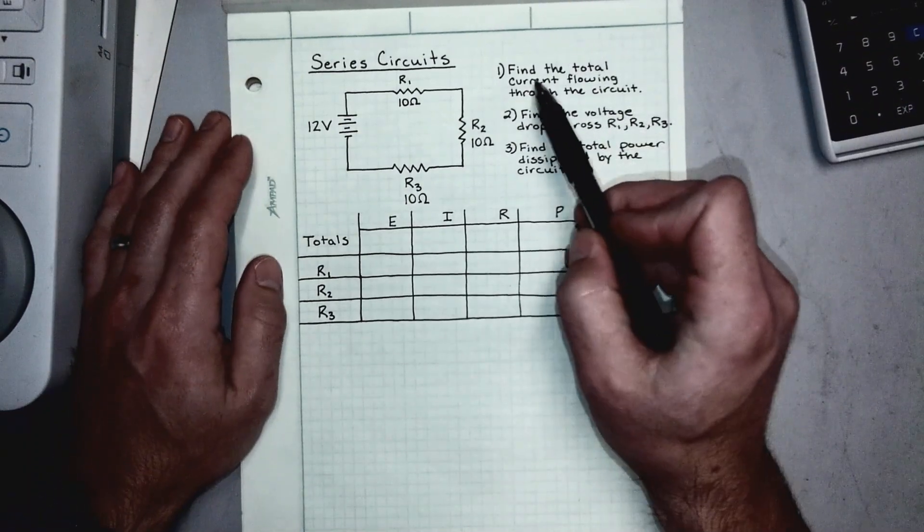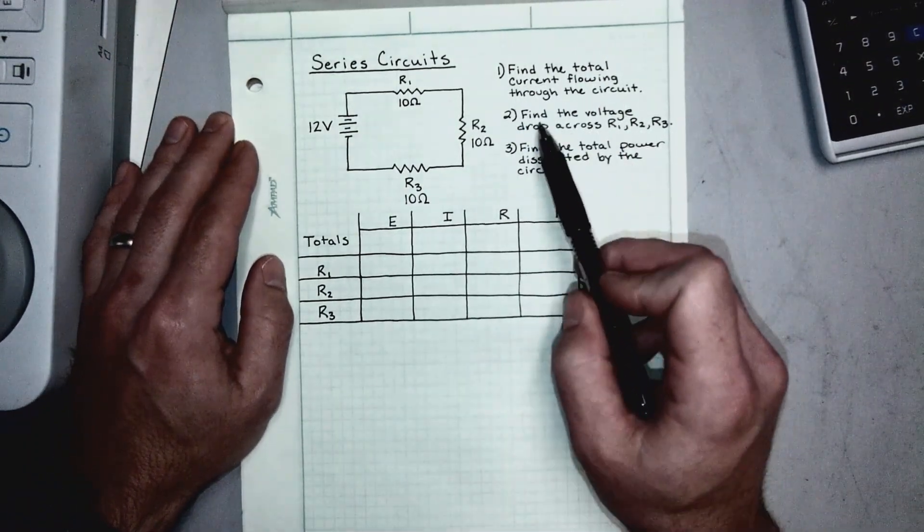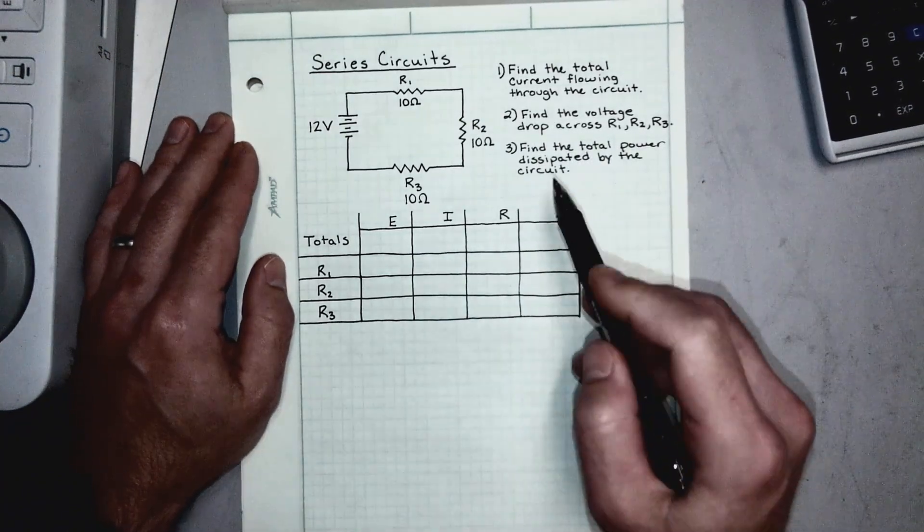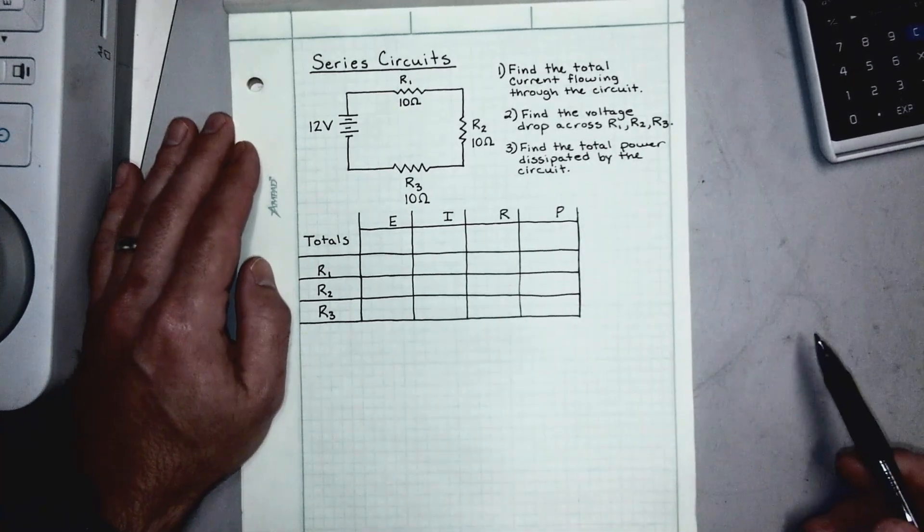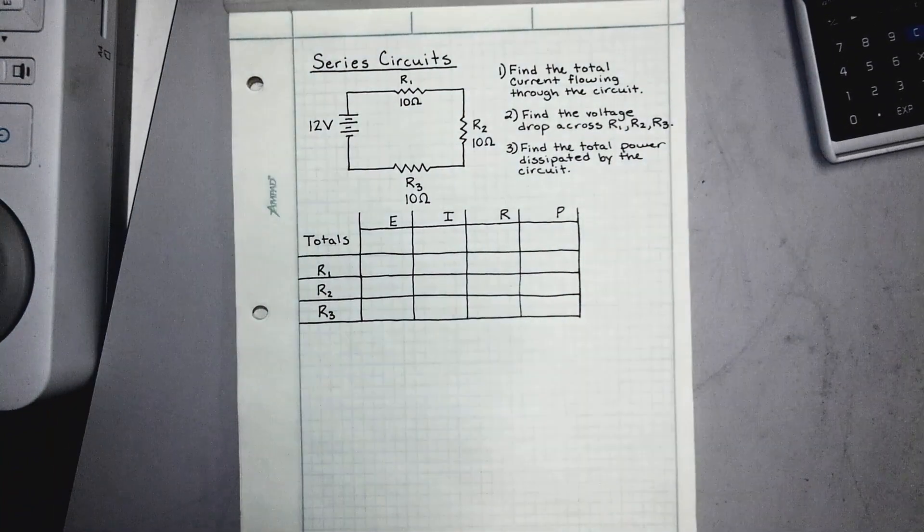First one says find the total current flowing through the circuit. The second one says find the voltage drop across r1, r2, and r3. And thirdly it says find the total power dissipated by the circuit. By the end of this video we should be able to do all of those pretty easily.